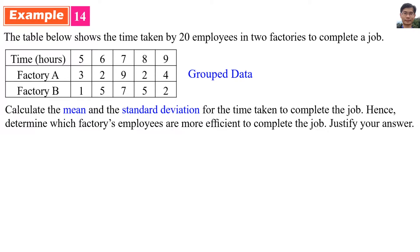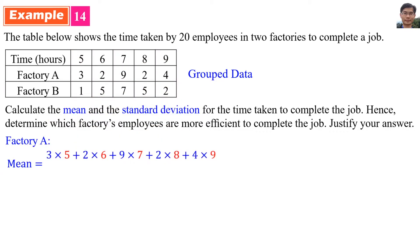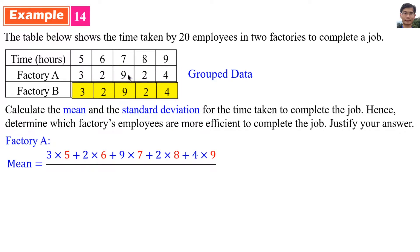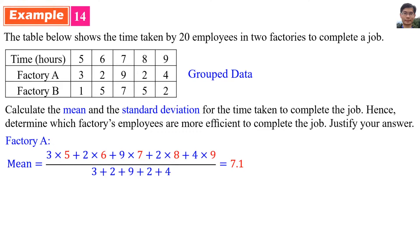Calculate the mean and the standard deviation for the time taken to complete the job. Hence, determine which factory's employees are more efficient to complete the job and justify your answer. For Factory A, since this is grouped data, the mean equals 3 times 5 plus 2 times 6 plus 9 times 7 plus 2 times 8 plus 4 times 9, divided by the total number of employees in Factory A. So the mean equals 7.1 for Factory A.